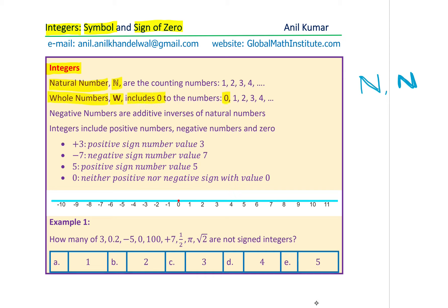The only difference between the whole numbers and the natural numbers is that the whole numbers include 0 — that is very critical. Sometimes there is confusion: the counting numbers are 1, 2, 3, 4, but we mix that up with 0, 1, 2, 3, 4. Whenever 0 is included, it is not the set of natural numbers but the set of whole numbers.